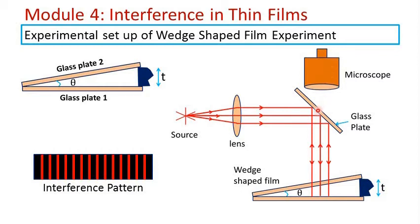In order to make the parallel rays of light incident normally on the wedge shaped film, a glass plate which is inclined at 45 degrees is utilized. This is a simple experimental setup which can be used to get the interference pattern with the help of wedge shaped film. A source of light is kept at the focal point of a convex lens so that after getting refracted through the lens, the light rays will travel parallel to each other.